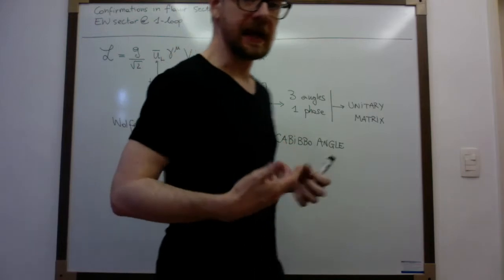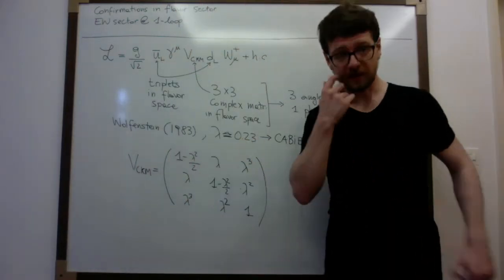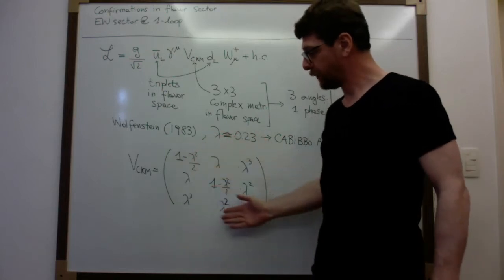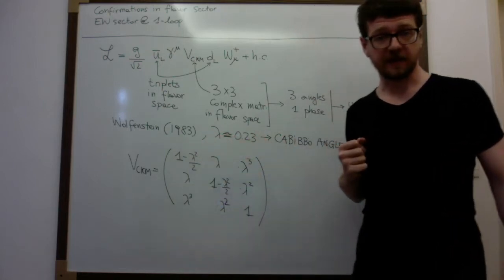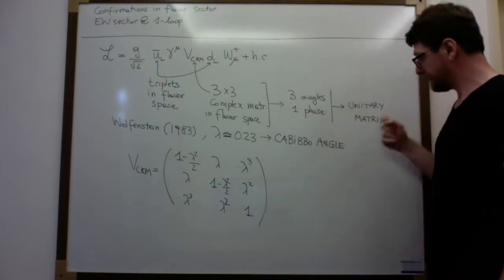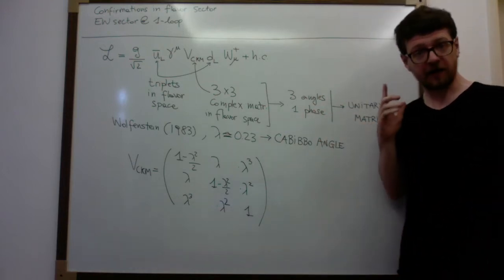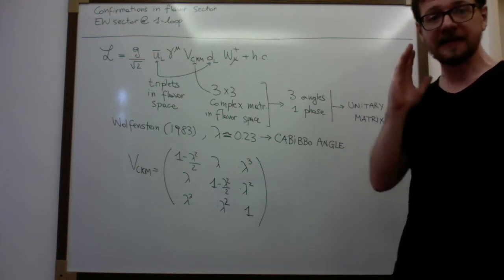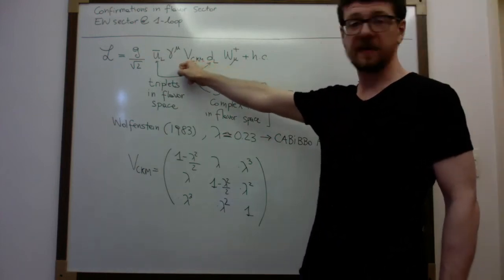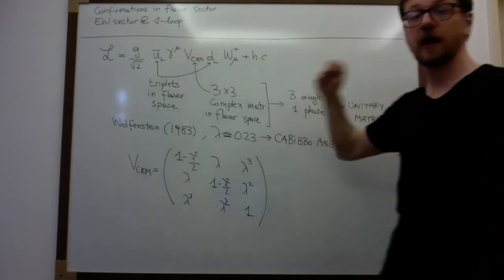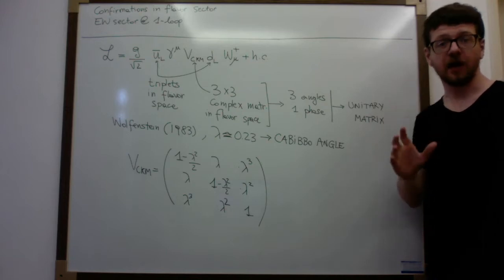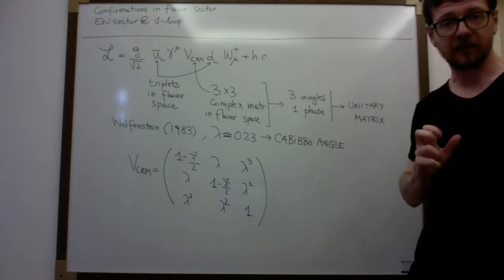So what is the catch that will allow us to actually perform precision measurements on this structure? The idea is this: remember that the prediction of the standard model — it is a theorem if you want — the standard model predicts that the CKM matrix, which appears in the charged current interaction, must be unitary. Otherwise it is not the standard model we are talking about.